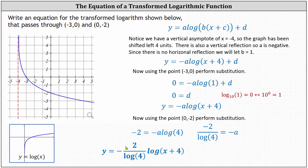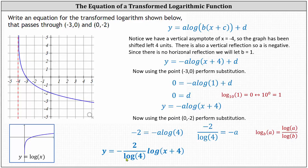So this is correct, but we can simplify this using the change of base formula in the opposite direction that we normally do. Using common logs and the change of base formula, log base b of a is equal to common log a divided by common log b. Notice the common log b in the denominator gives us the base of the logarithm. In our function, our denominator is common log four, which means we can write this equation using log base four. So y equals negative two divided by common log four times common log of the quantity x plus four can be written as y equals negative two log base four of the quantity x plus four.